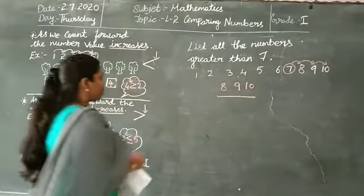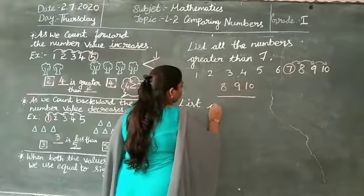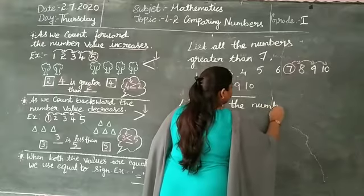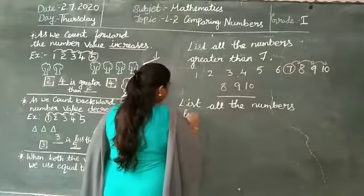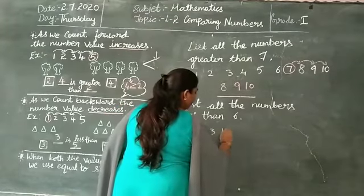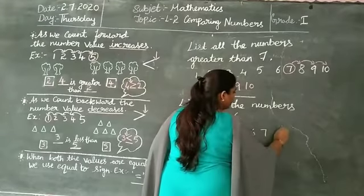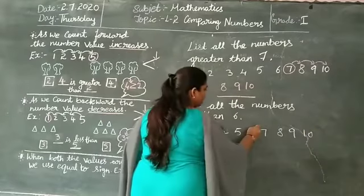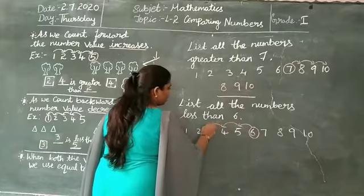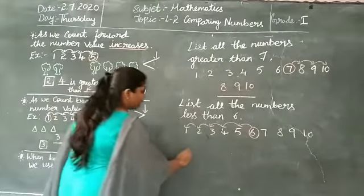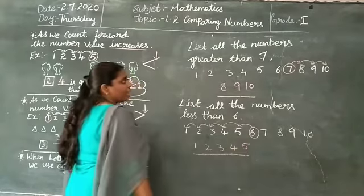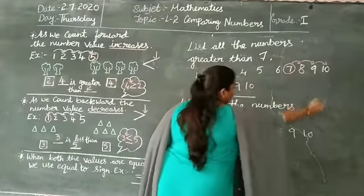Now, how to find less than? For example, list all the numbers less than 6. 1, 2, 3, 4, 5, 6, 7, 8, 9, 10. Circle the number 6. And now we should count backward. So 1, 2, 3, 4, and 5 are less than 6. Here greater than 7, and here less than 6.